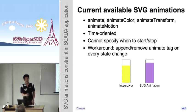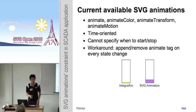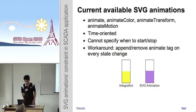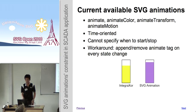This is very critical in a manufacturing plant. To work around this, we can use JavaScript to append a new animate tag into an SVG object every time the object has a state change. But this is not ideal in SCADA software because some objects have a very short duration between state changes.